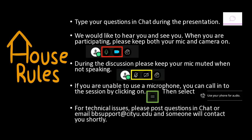Before we begin, let's go over some house rules. To participate in discussions you can use the chat and type your comments and questions, or you can use your microphone. We highly encourage you to use your microphones because we love hearing your voices. If you don't have a microphone, you can call in by using the option to use your phone for audio. There is an icon at the top that looks like a menu — click on it, choose 'use your phone for audio,' and you'll be able to connect via phone.